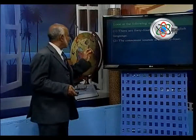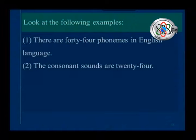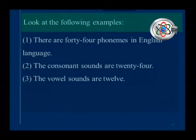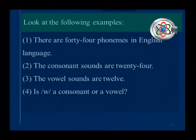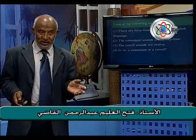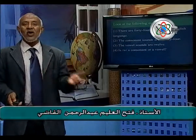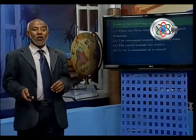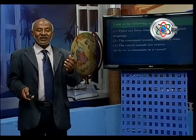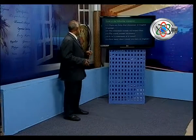There are 44 phonemes in English: 24 consonant sounds and 20 vowel sounds. Is 'W' a consonant or a vowel? It is sometimes a vowel and sometimes a consonant. When it is a consonant, for example in the word 'wrong' (W-R-O-N-G), it is a consonant sound. But in the word 'word', it is a vowel — you have to pronounce it as a vowel.